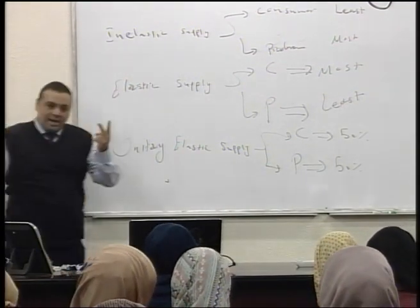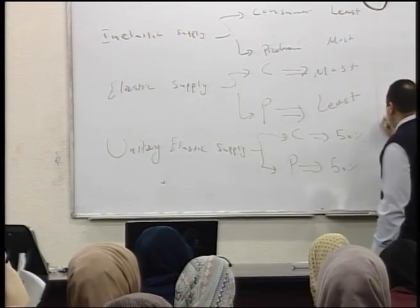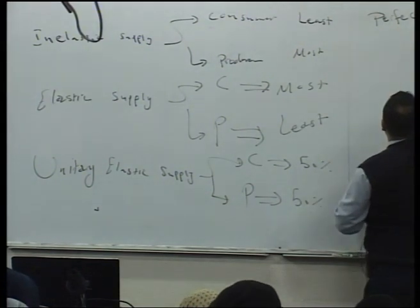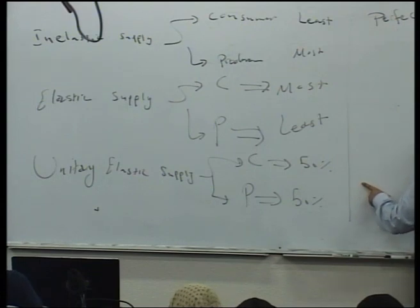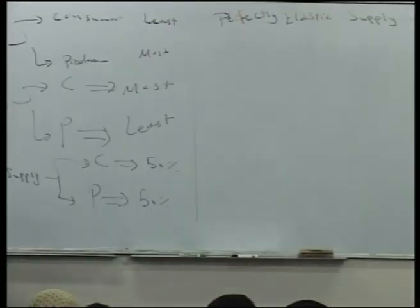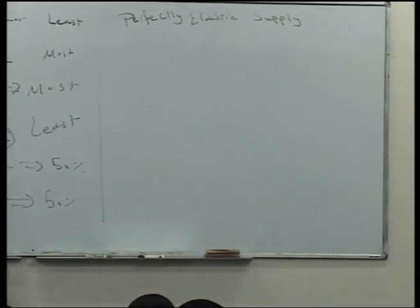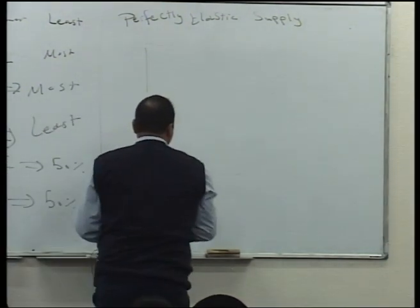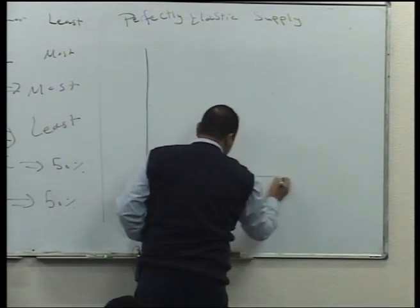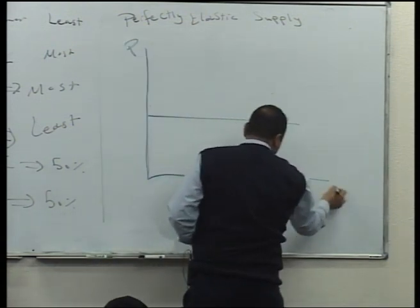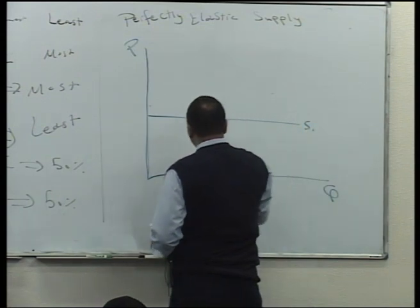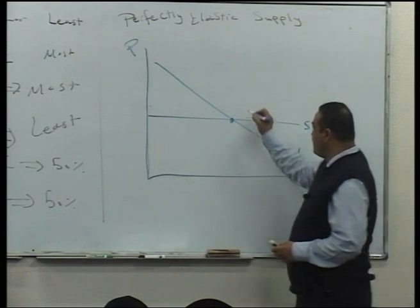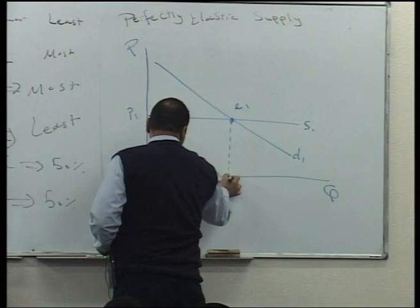We still have two cases. The fourth case: when supply is perfectly elastic. In this case, the supply curve is horizontal. On the graph, price is on the vertical axis and quantity on the horizontal axis. S1 is the horizontal supply curve, and D1 is the demand curve. This is the original initial equilibrium point E1, at price P1 and quantity Q1.